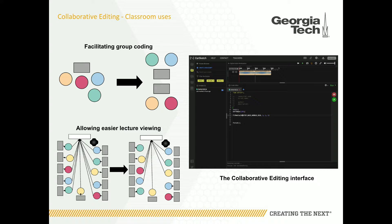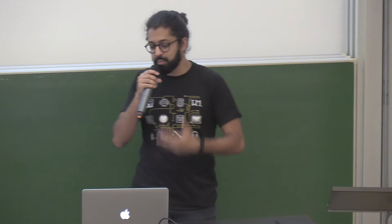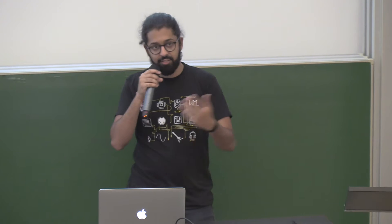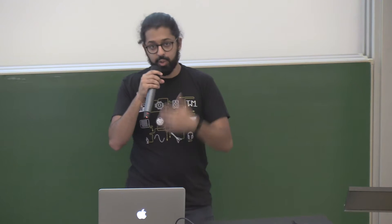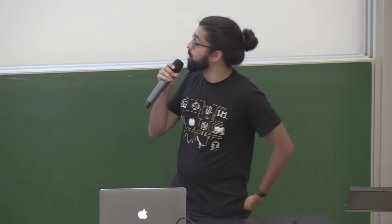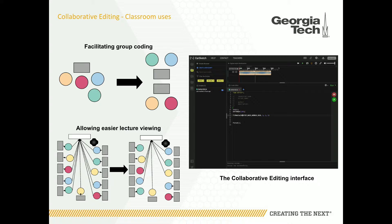One of the main contexts of use we had in mind for collaborative editing was the classroom. We were hoping it could bring more interactivity to the classroom experience. For example, if a teacher is lecturing off an EarSketch script, they could essentially call students to the chalkboard — have them implement functions or do exercises right in the code in real time. We also thought it could help with in-class group work: multiple people editing at the same time without sending files back and forth or dealing with version control, and it could help students work together even if there aren't enough laptops.